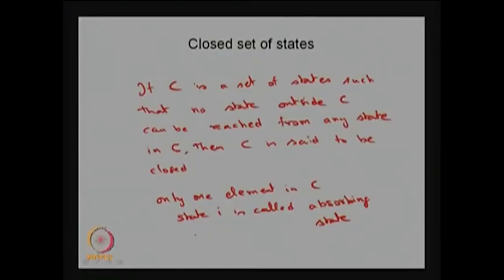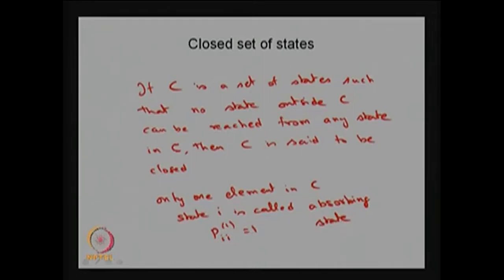A state i is said to be an absorbing state if it forms a closed communicating class which has only one element in that class. There is also a possibility of more than one element in the closed communicating class. We can also define the absorbing state using the definition P(i,i) in one step equals 1. That means the diagonal element of the corresponding row in the one-step transition probability matrix is 1 — the system starting from state i moves into the same state i with probability 1. If this probability is 1, we say that state is an absorbing state.